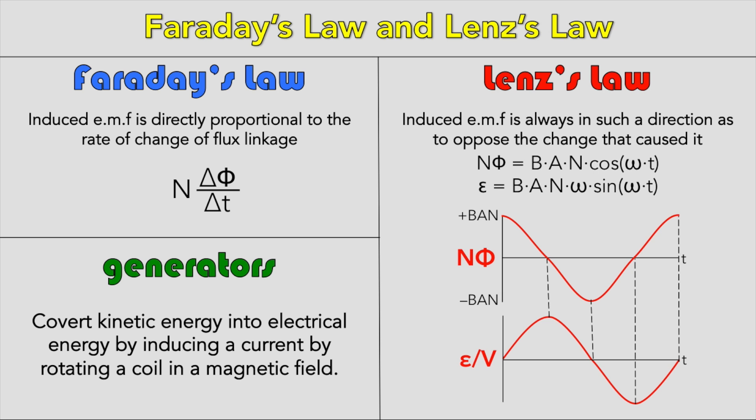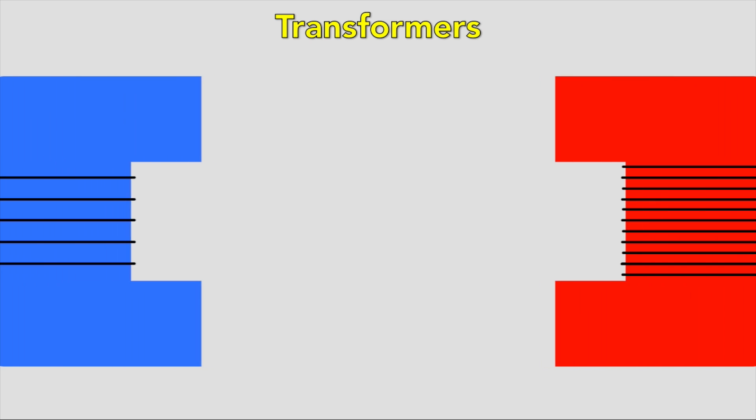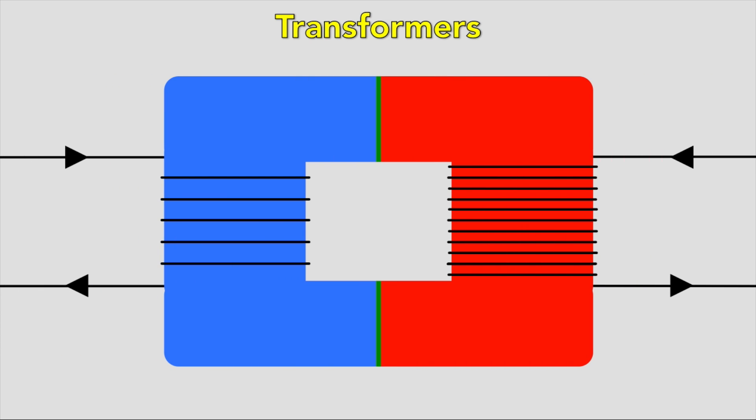Transformers are devices that make use of electromagnetic induction to change the size of a voltage for an alternating current. An AC flowing in the primary coil causes the core to magnetise, de-magnetise and re-magnetise continuously in opposite directions. This produces a rapidly changing magnetic flux across the core. A soft iron core or other magnetically soft material is needed. The rapidly changing magnetic flux in the iron core passes through the second coil, inducing an alternating voltage of the same frequency, with the voltage difference depending on the number of turns.